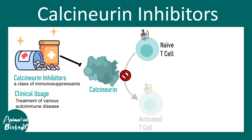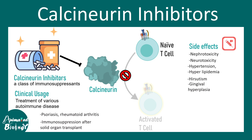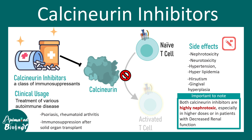This is very useful for the treatment of various autoimmune diseases such as psoriasis, rheumatoid arthritis, etc. Immunosuppression is also required after solid organ transplant, such as kidney or liver transplant. Though these drugs are really important to modulate the immune response, they have defined side effects like nephrotoxicity, neurotoxicity, hypertension, hyperlipidemia, hirsutism, and gingival hyperplasia. All these calcineurin inhibitors are potent nephrotoxic agents that can potentially compromise renal function.